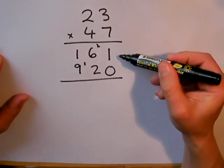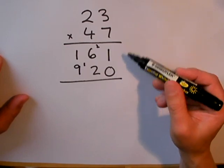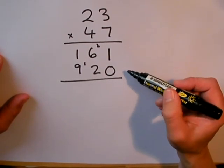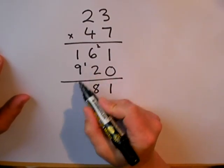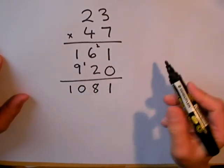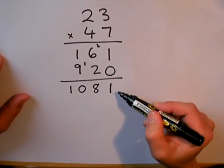Remember, this first answer is 23 multiplied by 7, and this is 23 multiplied by 40. So I need to add these two numbers together. 1, 8, and 1 and 9 is 10. So the answer to 23 multiplied by 47 is 1,081.